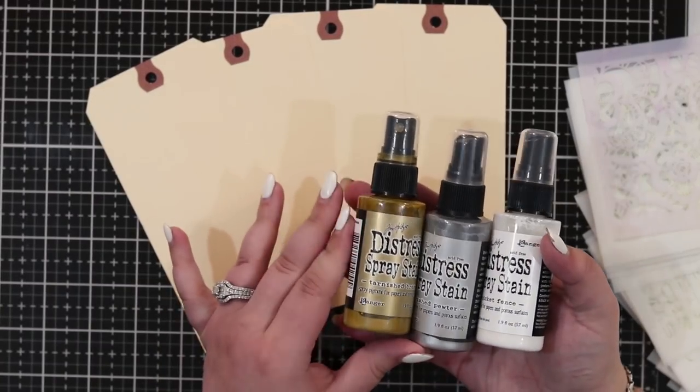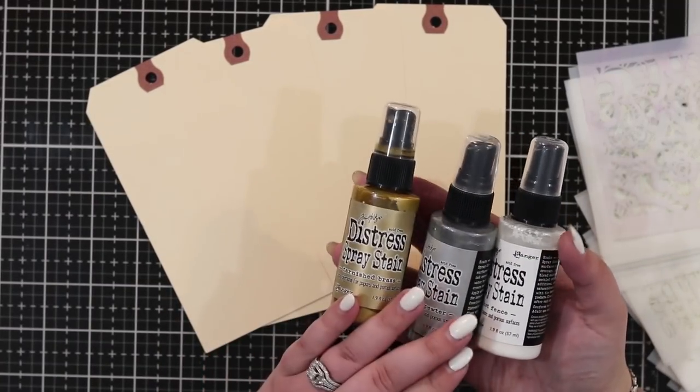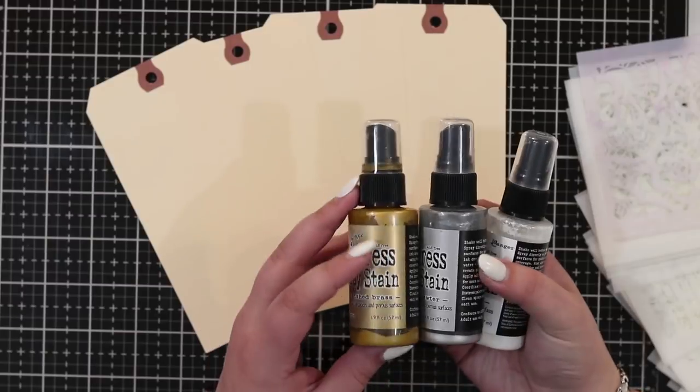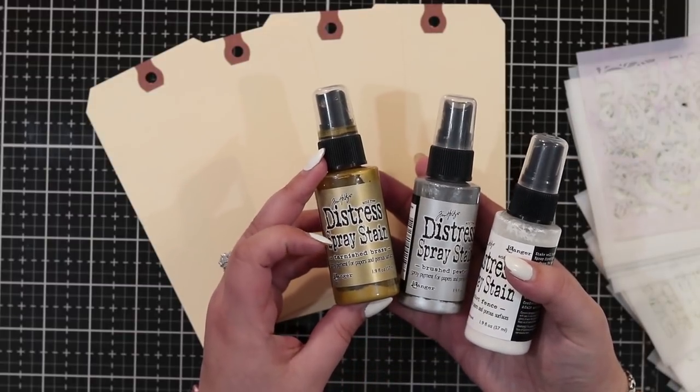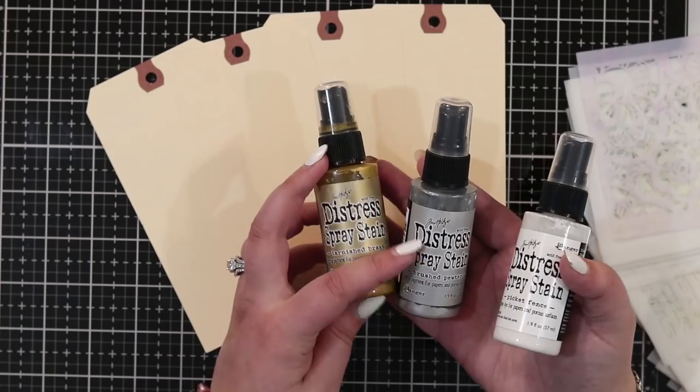Here I have some of the metallic ones. We have the brass, the pewter, there's a white. They come in all of the 60 distress colors so you can match them to any of your projects.